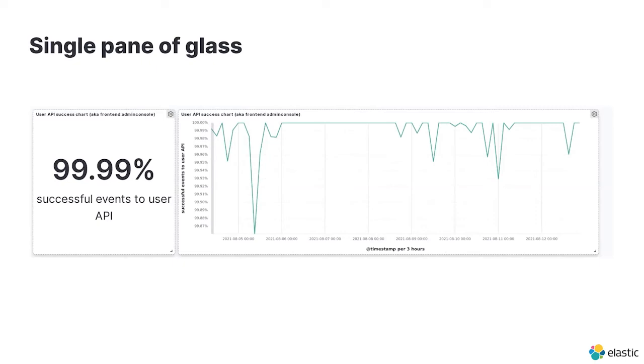Our global single pane of glass allows for a global view of service level objectives and the ability to display data at different organizational levels. Someone in leadership may want to see quarter over quarter to see trends for availability for the last period of time. Someone on call may need to do more nuanced debugging of something that might have happened in the past few minutes. Having the ability to use Kibana to do this allows us to filter to individual regions as well as look at whatever time span makes sense.